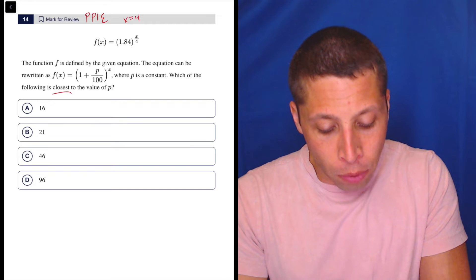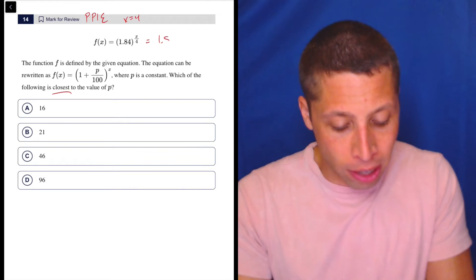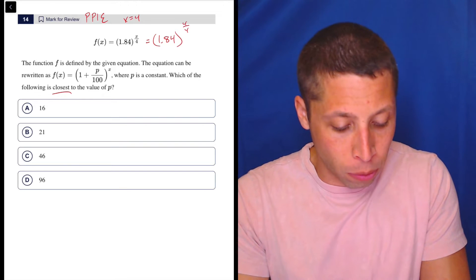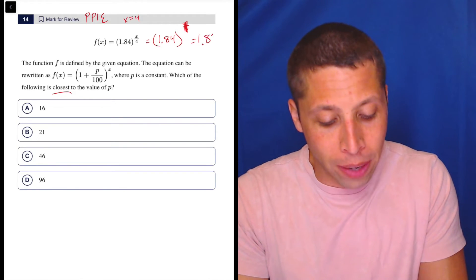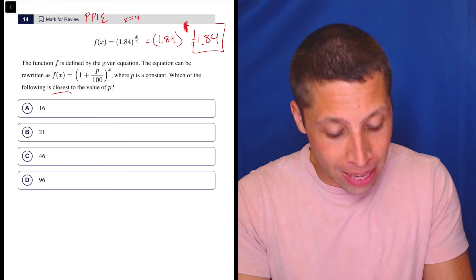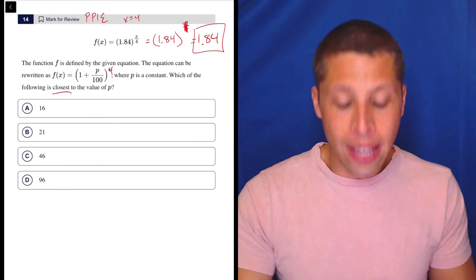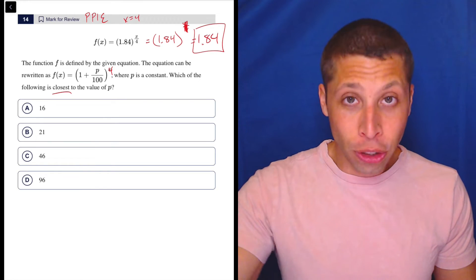So let's make it four, right? Because then this is easy. I don't even need the calculator. This is 1.84 to the four over four, which is one, which is just 1.84, right? So I have a clear sense of what I need. That's my magic number. Now, when I plug four in for x in the other equation, I should get the same thing.